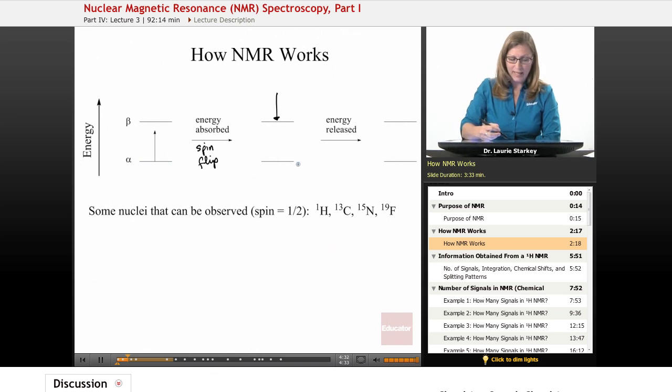we call that resonating, and it's going to now have the beta spin state. It's going to be higher in energy. We're going to pulse it with some energy, and then we're going to let that come back down to its original state, and when that energy is released, we call this process relaxation. After letting the sample relax, we observe which frequencies have been absorbed, and we can generate a spectrum.